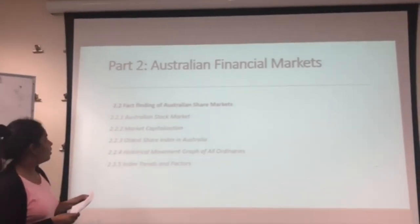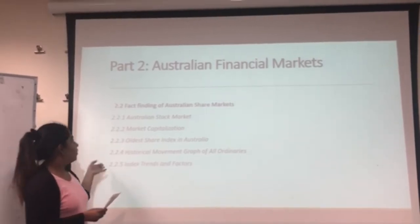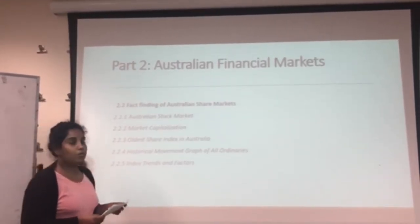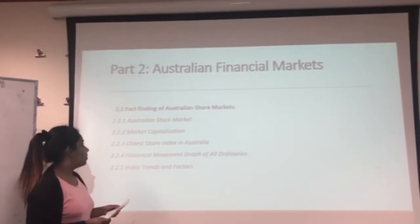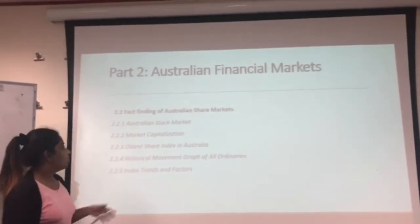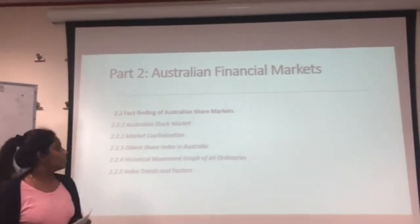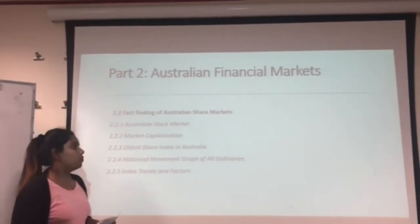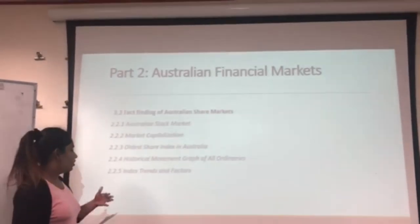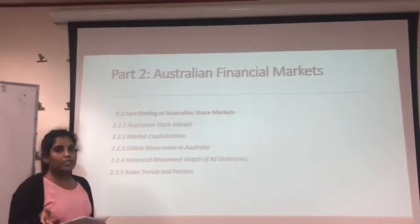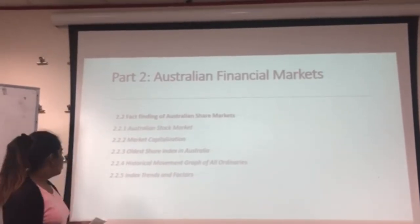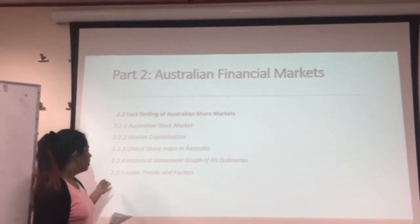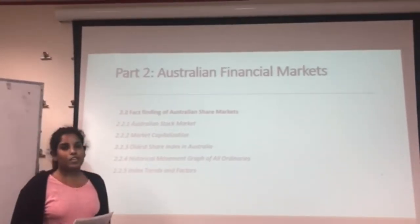Under Australian share markets, there are also five criteria: first, the Australian stock market; second, market capitalisation; third, the All Ordinaries share index in Australia; fourth, the historical movement graph of the All Ordinaries, which will be explained in the report; and fifth, index trend and factors.